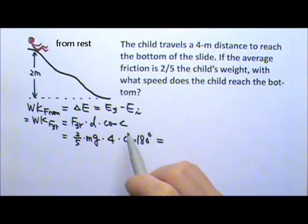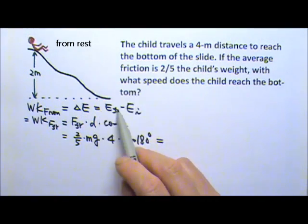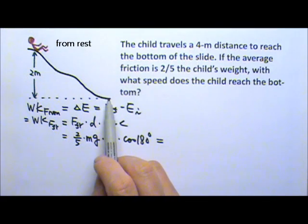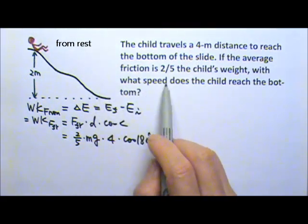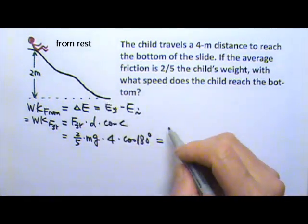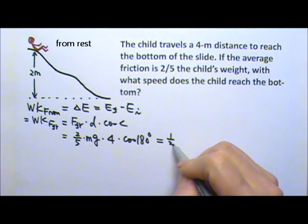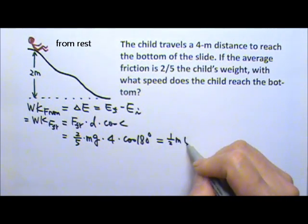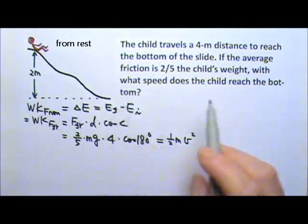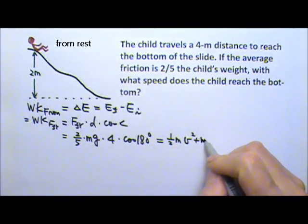And this equals the final mechanical energy minus the initial mechanical energy. The final mechanical energy is when the child is at the bottom of the slide and we're looking for the speed. So the child may be moving and we're looking for that speed. So there may be 1 half mv squared. Down here, if I say this is the ground, then there is no mgy.